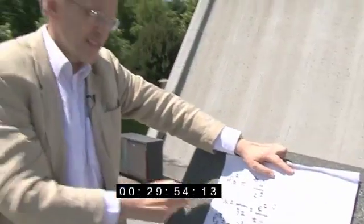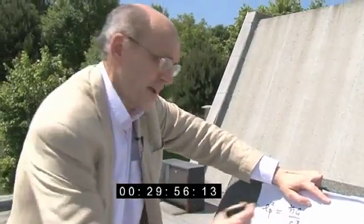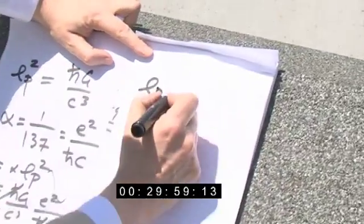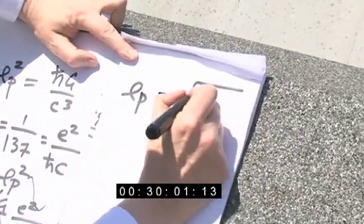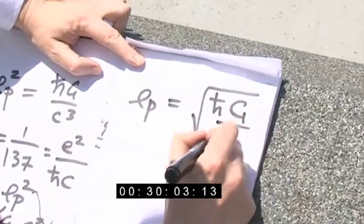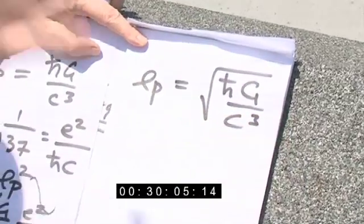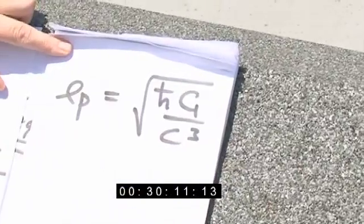The other thing I always think is slightly unsatisfactory with the Planck length — and the Stoney length as well, for that matter — is that it's actually given by this square root relation. If you wanted to define a length scale, having these square roots in here is a little bit... I personally feel a bit uncomfortable with that.